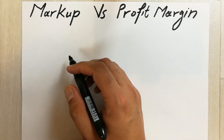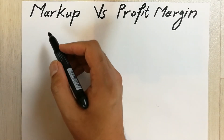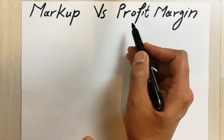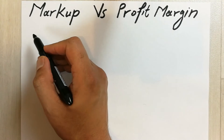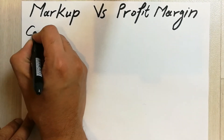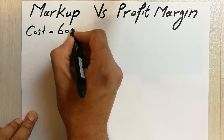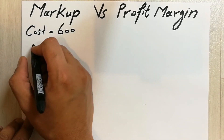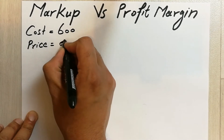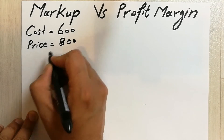Hello guys, I hope you are doing really well. Today I am going to show you how to find out the difference between markup and profit margin. Let's say you have a product and the cost of that product is 600, and the selling price of that product is 800.